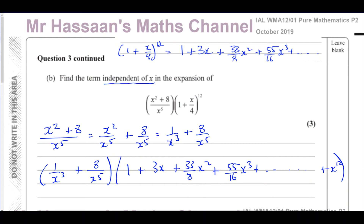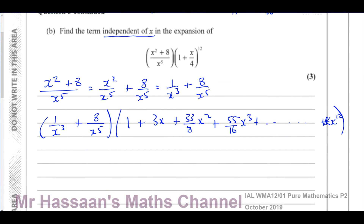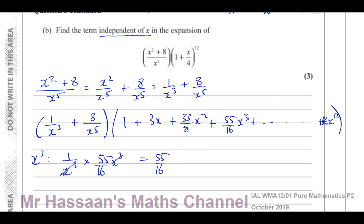We're going to multiply each part by all the terms up to x^12. We need to find which terms are independent of x — those are the ones where x cancels out. If we multiply 1/x³ by the x³ term, the x cancels. So 1/x³ times 55/16 x³: the x³ terms cancel, leaving 55/16. That's one part of the constant term.